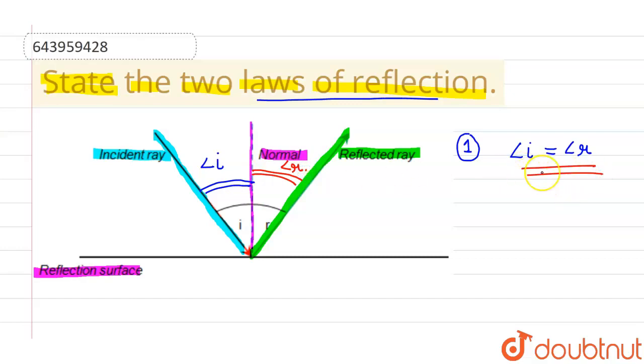And the second law of reflection says that this incident ray, this reflected ray, and this normal, all these three lines lie on a same plane. So if I write this, the second law states that incident ray, normal, and reflected ray lie on the same plane.